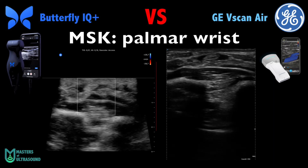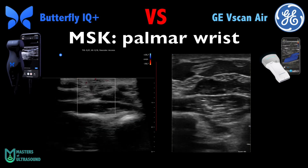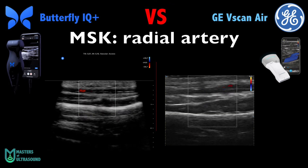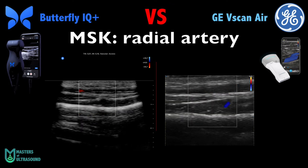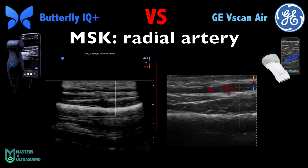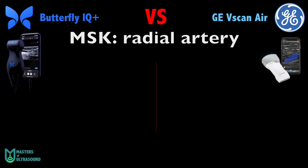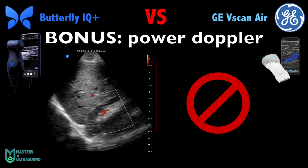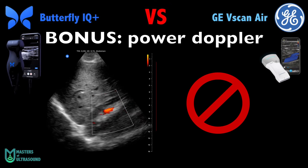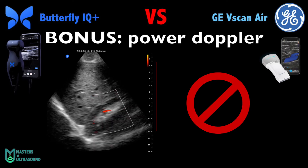In musculoskeletal imaging, both are pretty similar — maybe the Vscan is slightly sharper, but it's hard to say. Here is the radial artery color Doppler. Both Doppler sensitivities appear to be at the same level. As a bonus, the Butterfly IQ has Power Doppler mode, which may be useful for detecting arthritis.